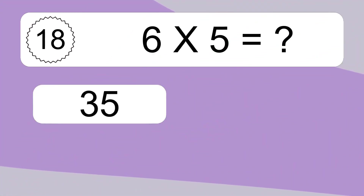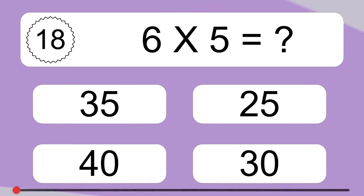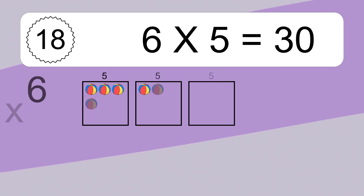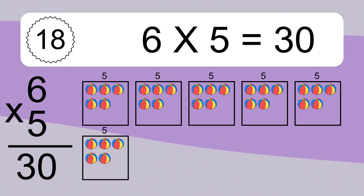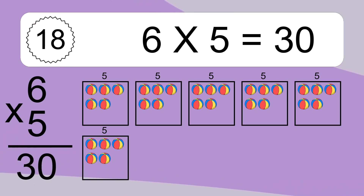6 times 5 equals what? 6 times 5 equals 30. We have 6 boxes, and each box has 5 colorful balls inside. If you count all the balls in all the boxes together, you will have 6 times 5 balls. This equals 30 balls.